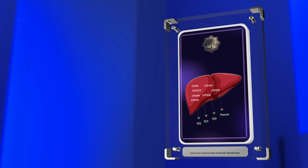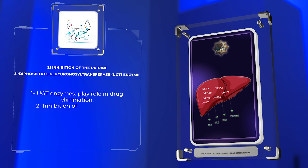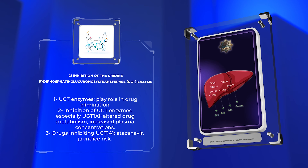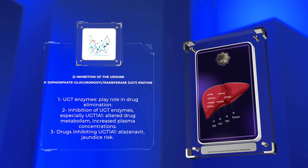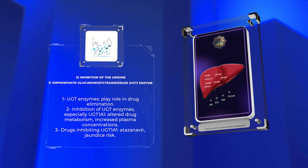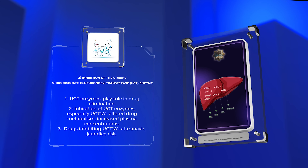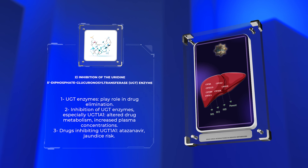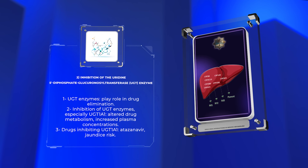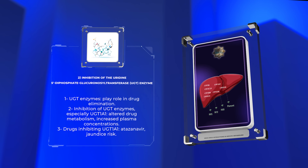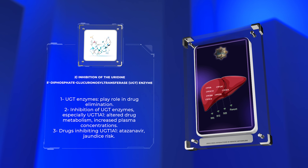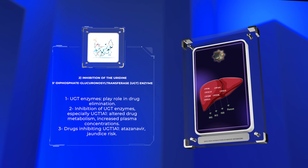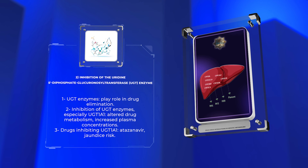UGT enzymes play a vital role in the elimination of drugs and their metabolites by promoting conjugation reactions. Inhibition of UGT enzymes, particularly UGT1A1, can lead to altered drug metabolism and increased plasma concentrations. Some drugs, such as atazanavir, have been found to inhibit UGT1A1, resulting in reduced metabolism of bilirubin and subsequent jaundice. Understanding the inhibitory potential of drugs on UGT enzymes is essential to prevent adverse reactions and optimize therapy.